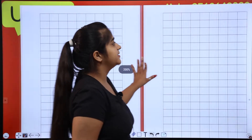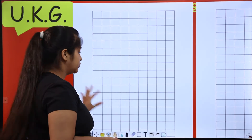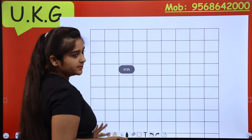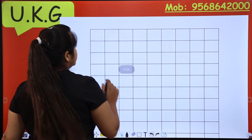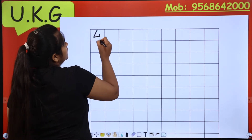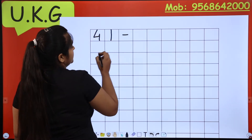So what are we going to do? First, we will open the notebook and put numbers. 4, 1 — 41.